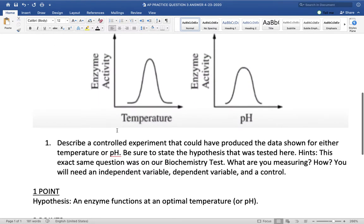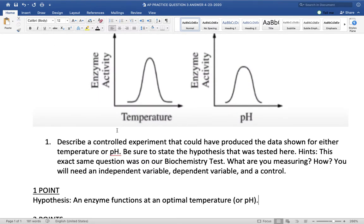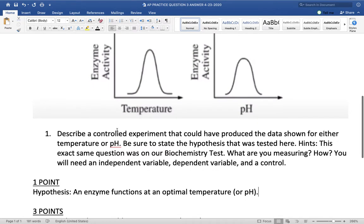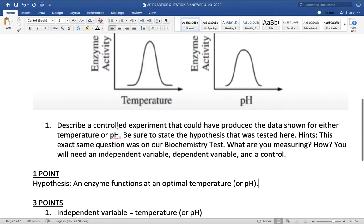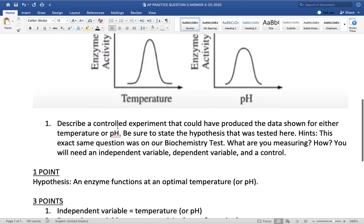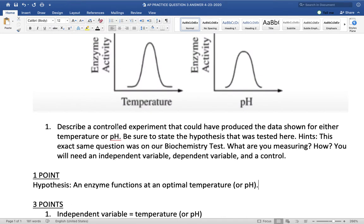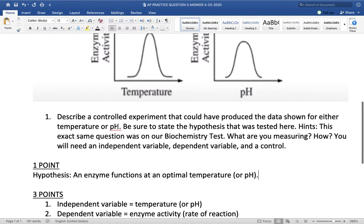Let's go through the type of answer you should have. One point for the hypothesis. So, hypothesis is based directly on the graphs, which states an enzyme functions at an optimal temperature. Or if you went the pH route, an enzyme functions at an optimal pH. And then the college board is looking for you to state that the independent variable is on the x, so that's temperature or pH. The dependent variable is the enzyme activity or the rate of the reaction.